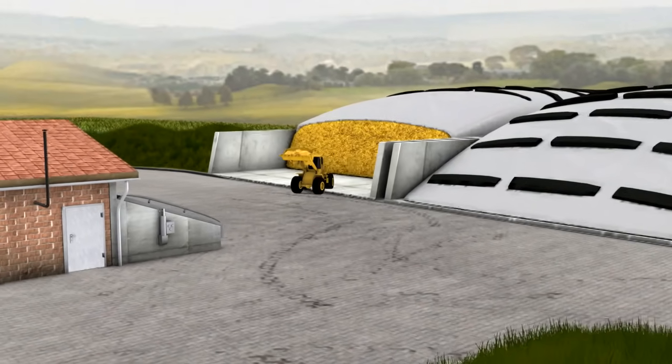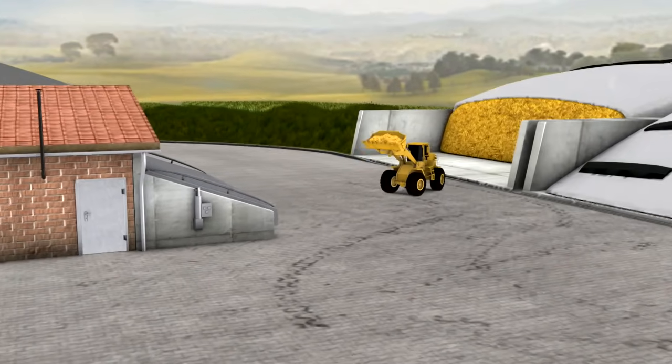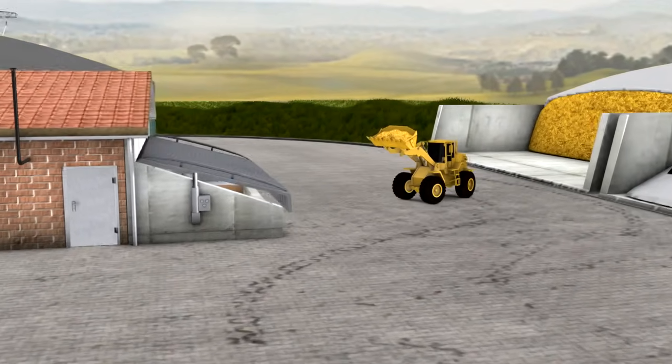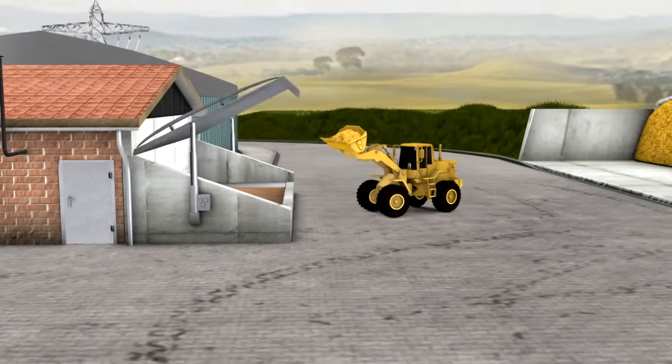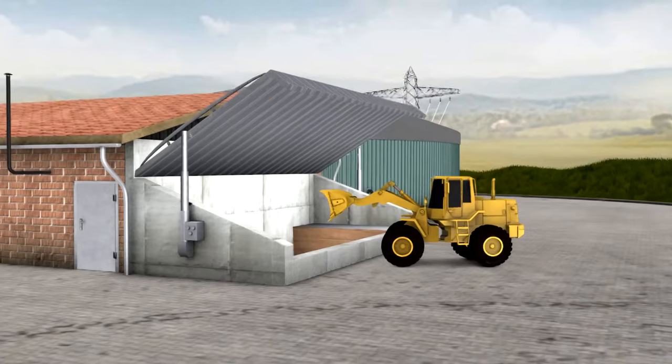Maize silage, among other things, is used as input material in this plant. The maize is supplied to the biogas plant through an acceptance bunker using a tractor loader. The bunker is designed with a storage capacity of two days.